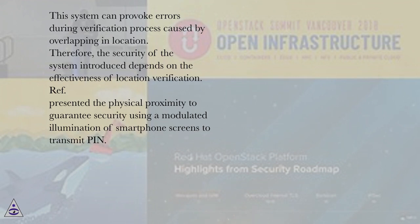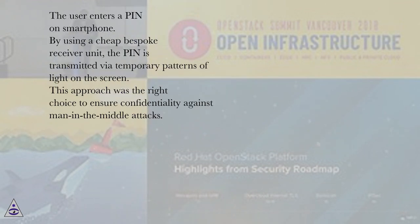Physical proximity was used to guarantee security by using a modulated illumination of smartphone screens to transmit a PIN. The user enters a PIN on the smartphone, and by using a cheap bespoke receiver unit, the PIN is transmitted via temporary patterns of light on the screen.